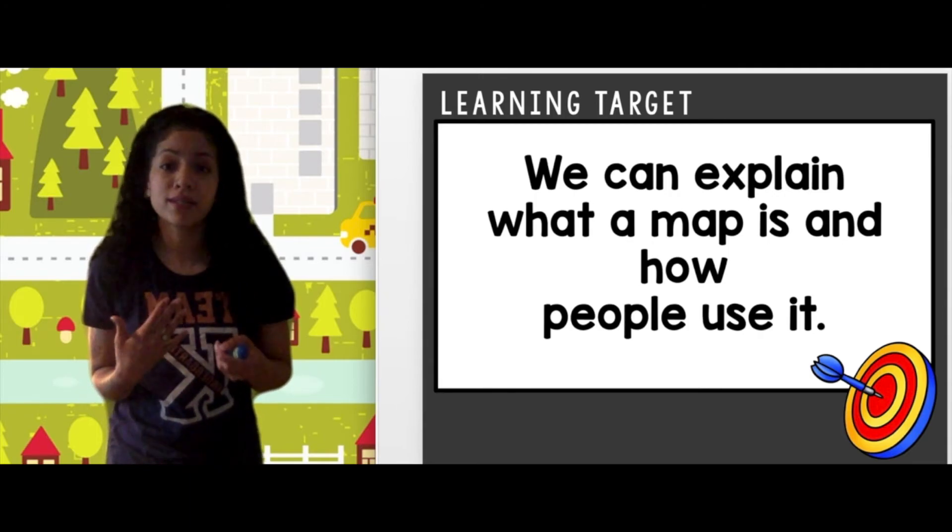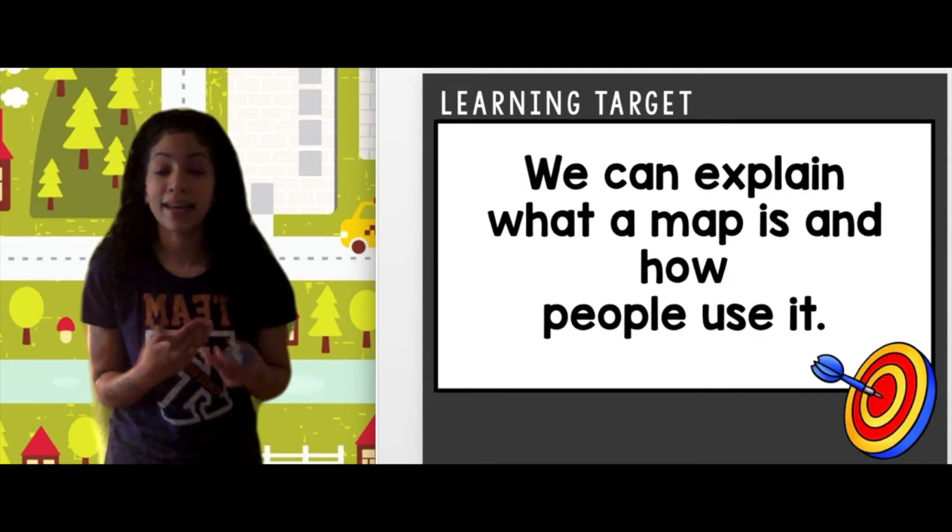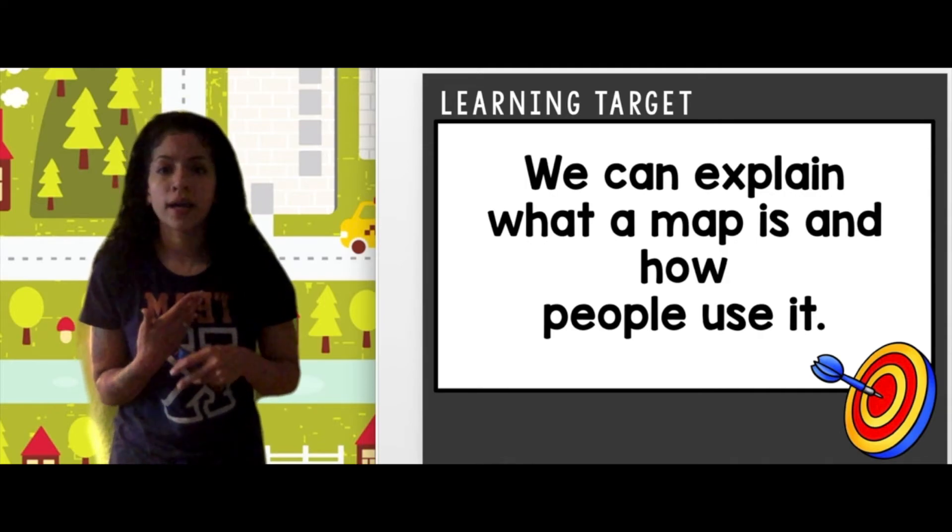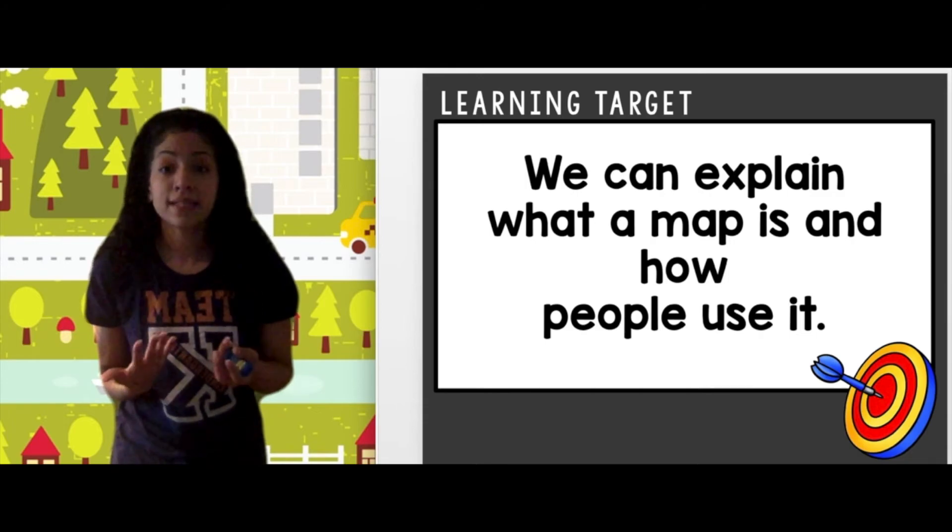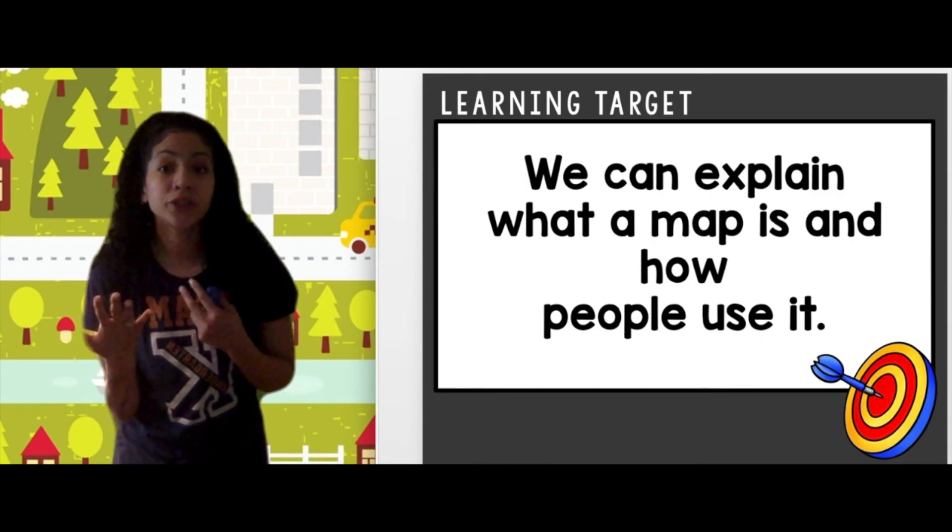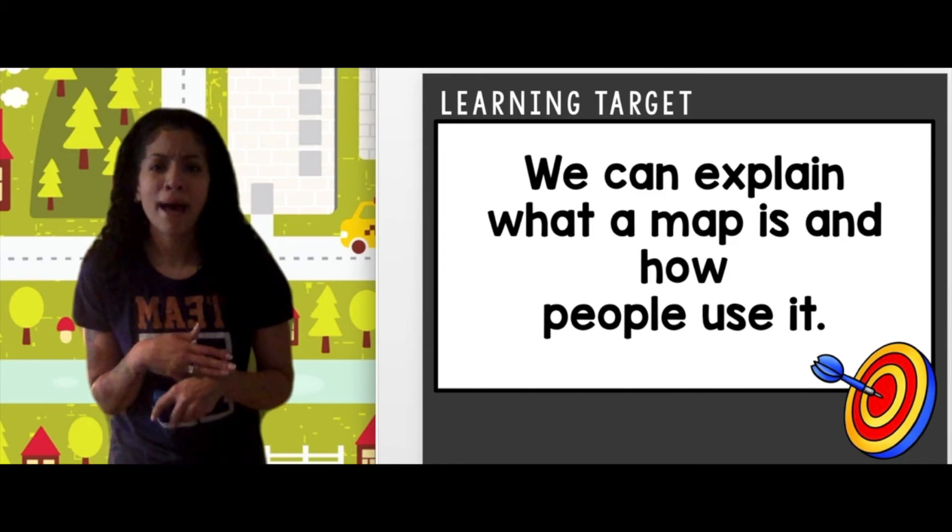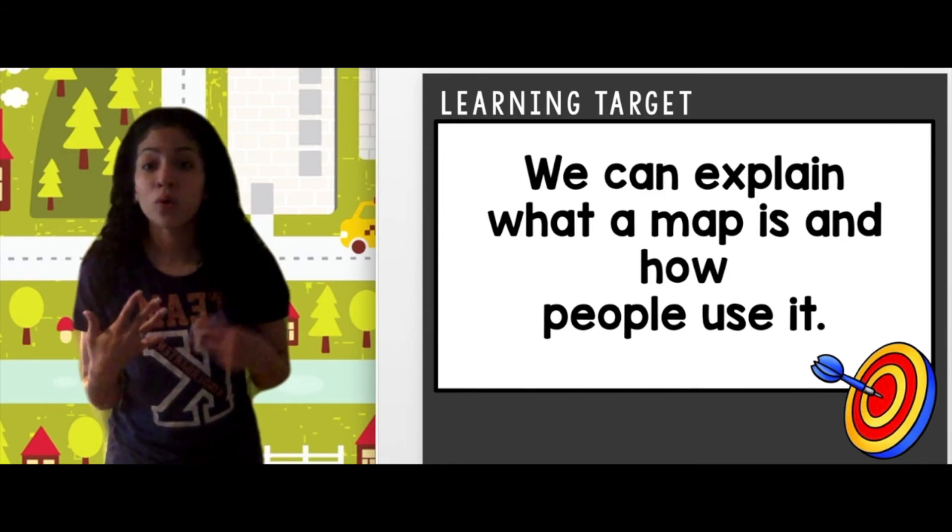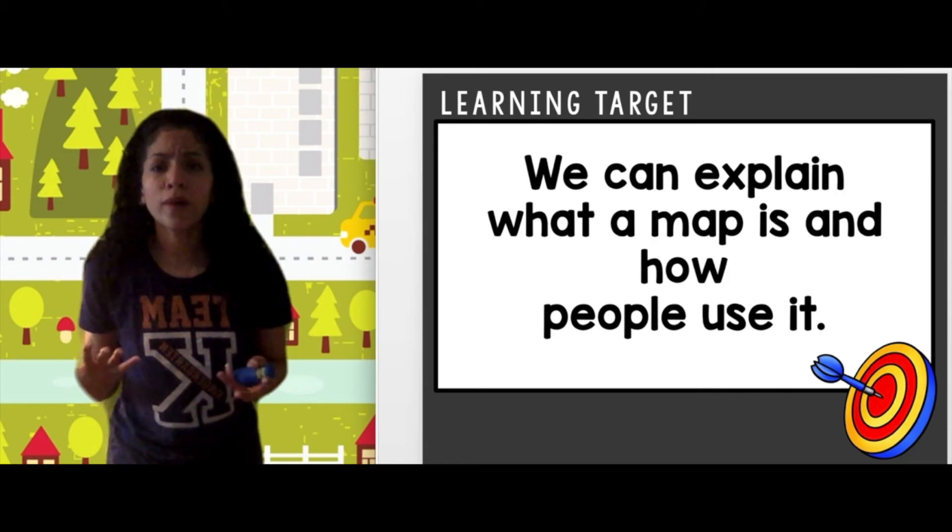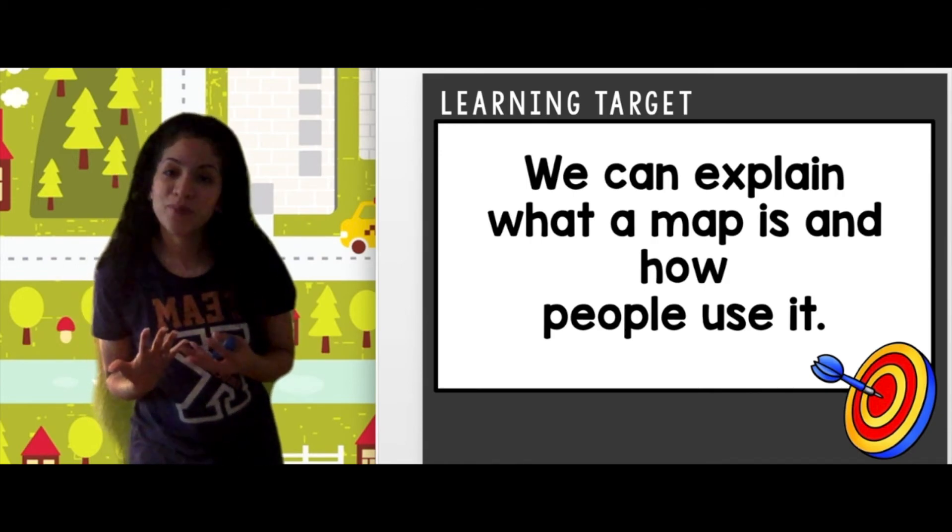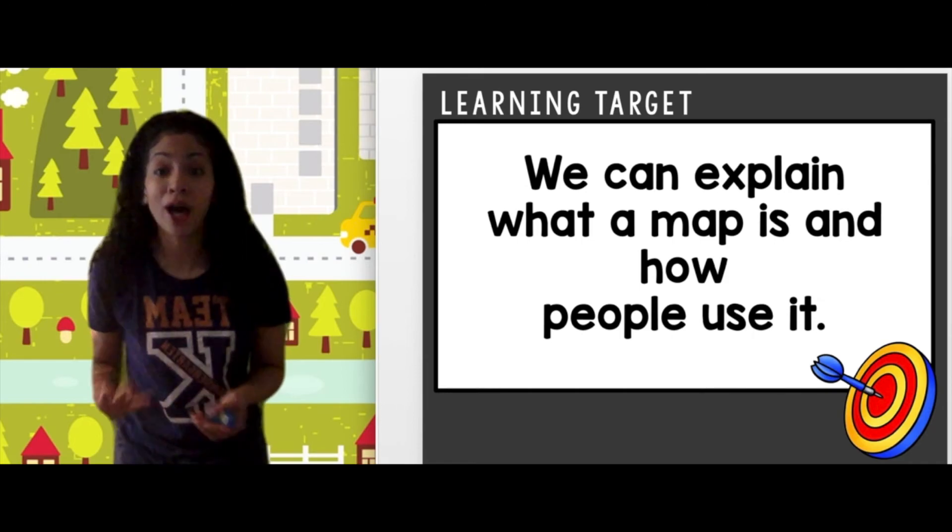It also can show us maybe what it looks like in a home or where places are like a doctor or a hospital or an airport. It can show us a map of a city or a town or somewhere in nature. Maps are important. They help us get where we need to go.